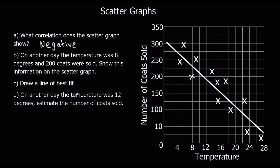On another day the temperature was 12 degrees — estimate the number of coats sold. So 12 degrees is here; we go up to our line and then across. We should use a ruler here. That gives approximately 175, so let's say it's roughly 190 coats. In an exam there'll be a margin of error — you're allowed an answer between a range. So as long as you've drawn a good line of best fit that goes through the middle of the points, your answer should be within the range.